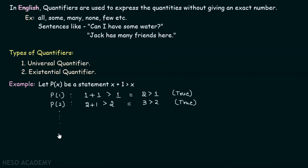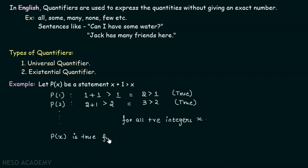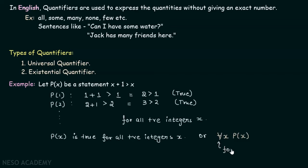This continues in the same way — it is true for all positive integers. p(x) is true for all positive integers x. Whatever positive integer you take, p(x) will always be true. So I can say p(x) is true for all positive integers x, or in other words: for all x, p(x). This particular notation — the upside-down A symbol — is called 'for all,' and this is the quantifier we are talking about.